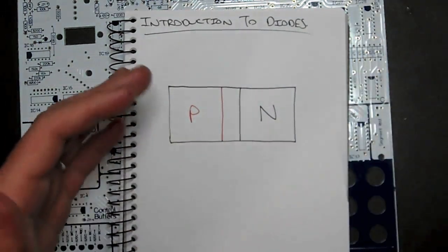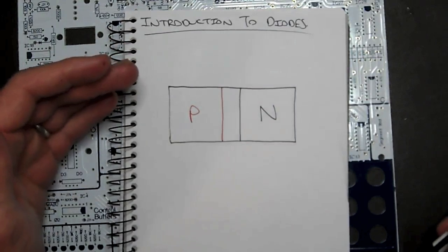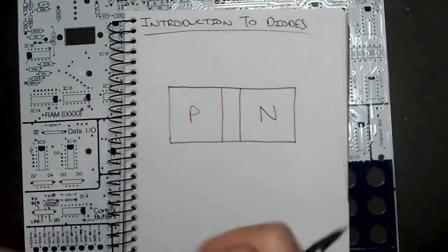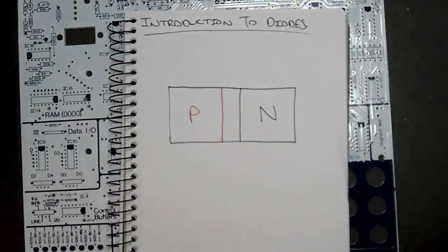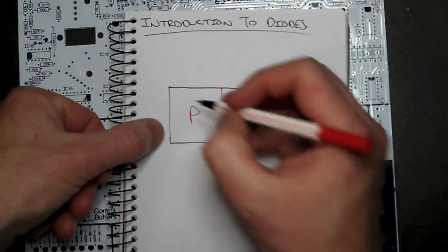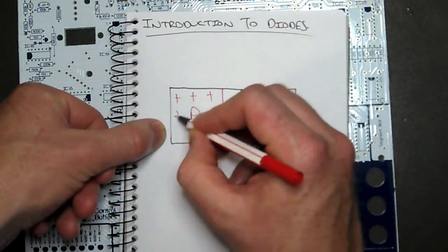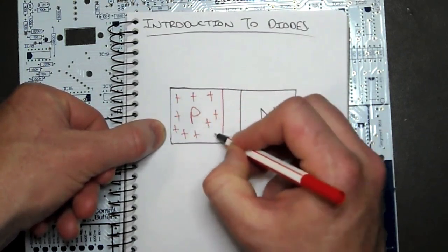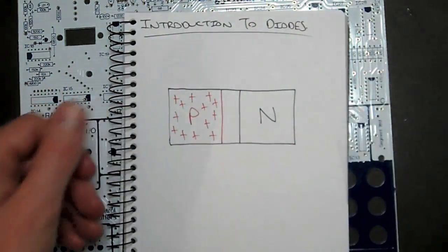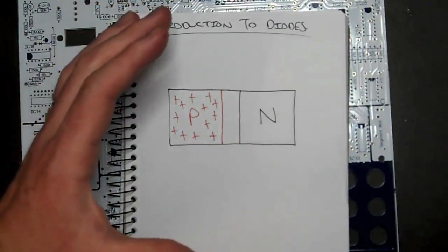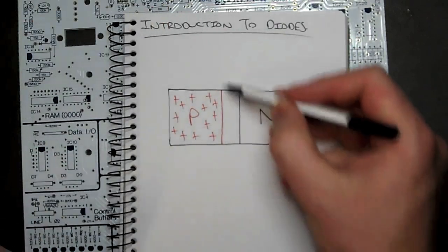With the P-type substrate, it is doped with such a material so that we actually have a deficit of electrons. If we have a deficit of electrons, it leaves us with a whole heap of holes, which are positive ions. So we've got a whole heap of positive ions, and so we call it P-type.